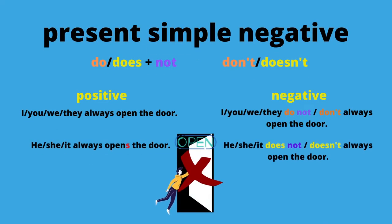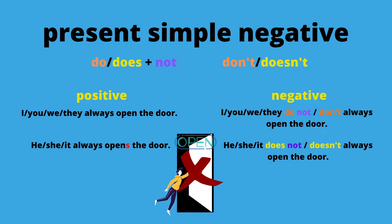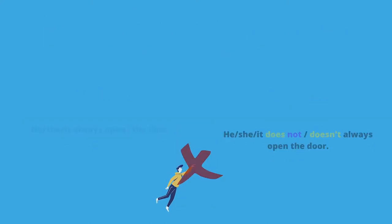We had an example with 'always,' but what happens when I want to express that this is not always the case? To form a negative sentence, we need 'do' plus 'not': 'I do not always open the door,' because it depends on who is standing outside. We can also contract the form: 'I don't always open the door.' Now take a quick guess — which person is going to be different again? Exactly — the third person. For he, she, or it, 'do' becomes 'does.' So it's 'he does not' or 'he doesn't' always open the door.